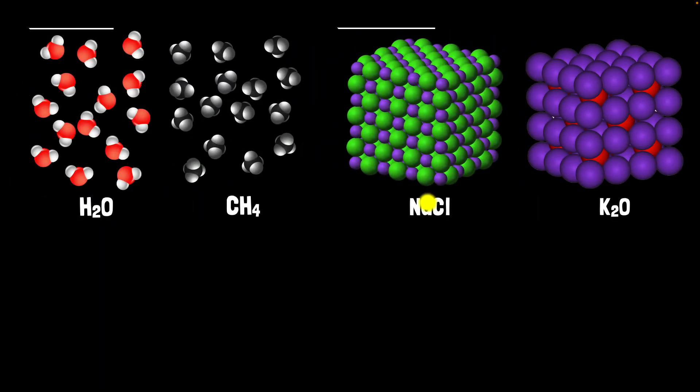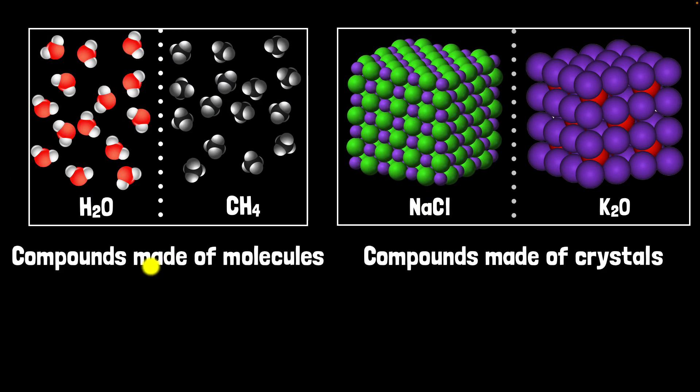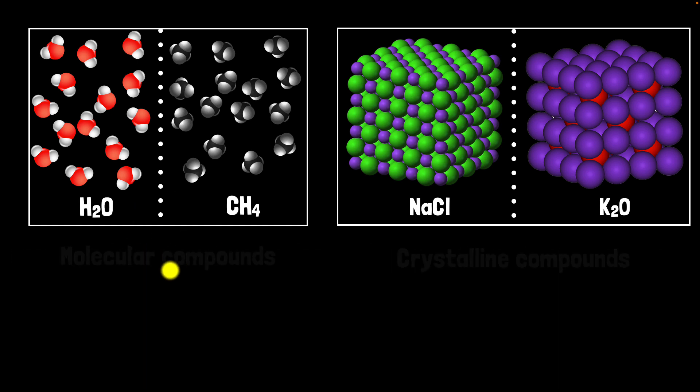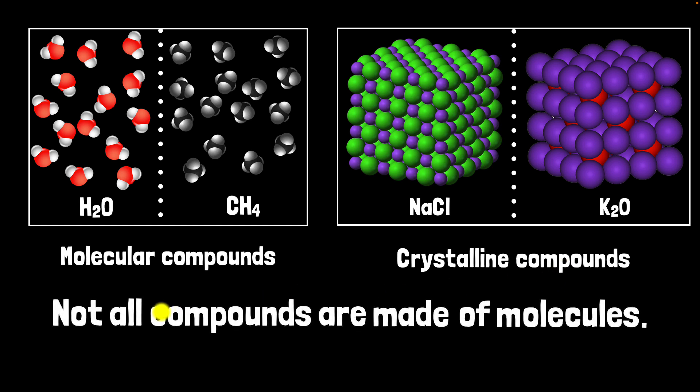So putting it all together, what we have so far is that we can have two kinds of compounds. We have compounds that are made of individual molecules, and we have compounds which are made of crystals. Now, of course, these are just two general categories of compounds, but there are more advanced forms of compounds as well. We'll not worry too much about them. But anyways, the compounds that are made of molecules are called molecular compounds, and the ones that are made of crystals are called crystalline compounds. So look, not all compounds are made of molecules. That's the important thing. They can also be crystalline. They can also be made of crystals.